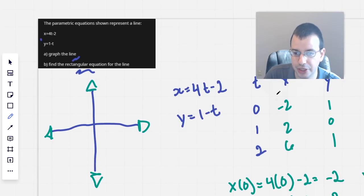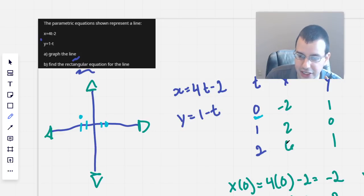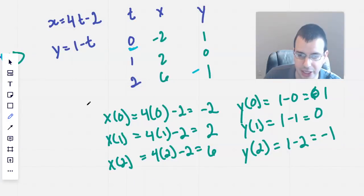We look at our first point. For time t equals 0, we have negative 2, 1. Next point we have is 2, 0. And then 6, negative 1.